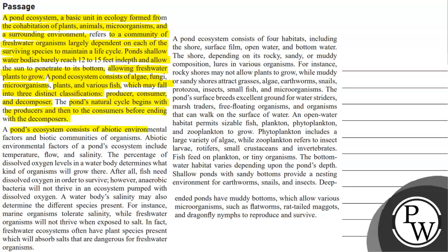A pond's ecosystem consists of abiotic environmental factors and biotic communities of organisms. Abiotic environmental factors of a pond ecosystem include temperature, flow and salinity. The percentage of dissolved oxygen levels in a water body determines the kind of organisms that will grow there. Fish need dissolved oxygen in order to survive; however, anaerobic bacteria will not thrive in an ecosystem pumped with dissolved oxygen. A water body's salinity may also determine the different species present.